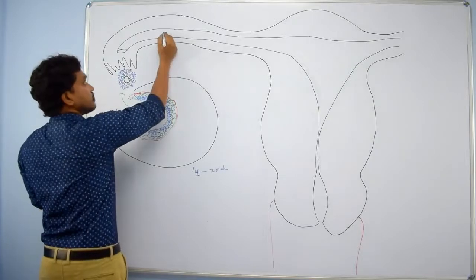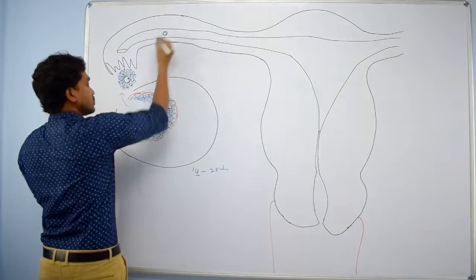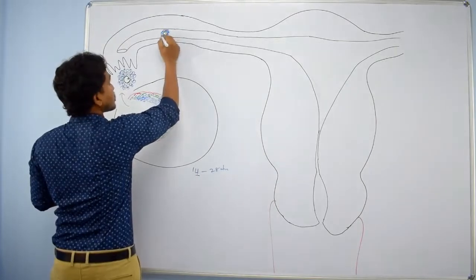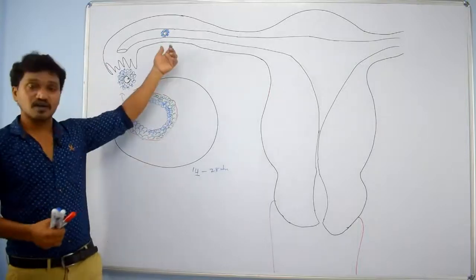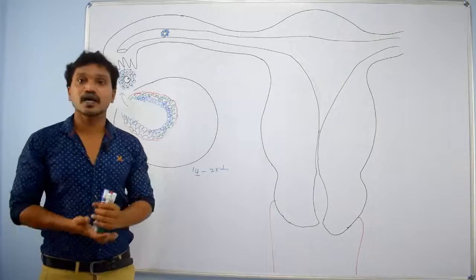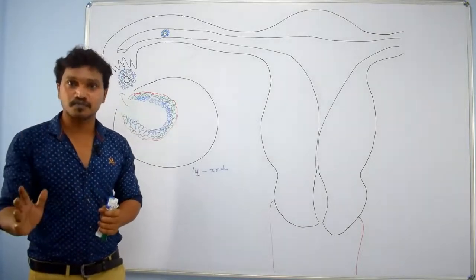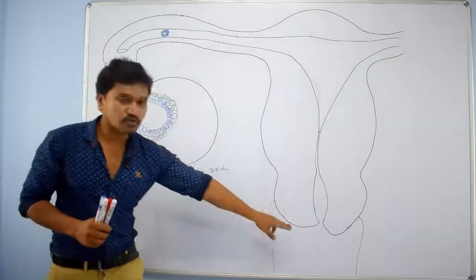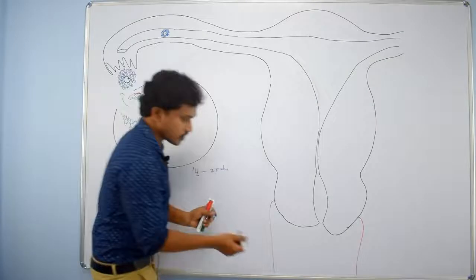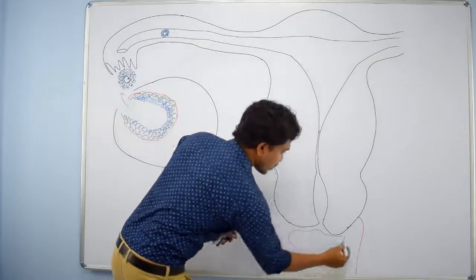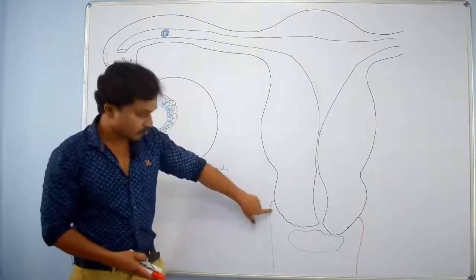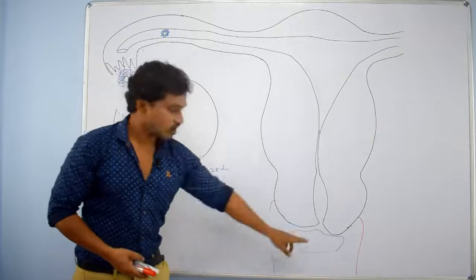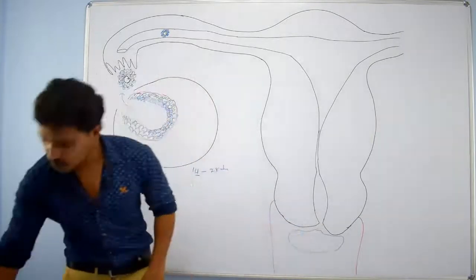The secondary oocyte is surrounded by zona pellucida and corona radiata cells. If sexual intercourse happens at the time of ovulation, semen will be deposited in the vaginal canal — in the fornix and at the cervix of the uterus — at the external os. Per each ejaculation, about 2 to 6 ml of semen is deposited, with an average of 3.5 ml.